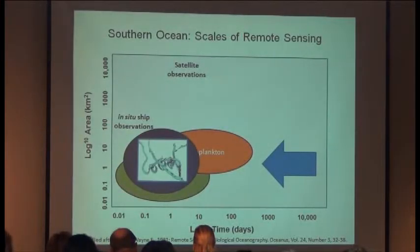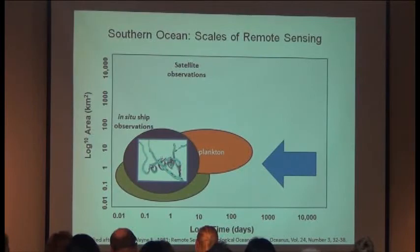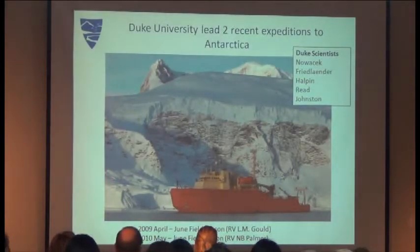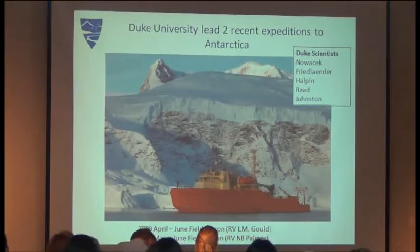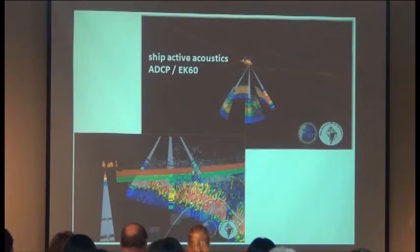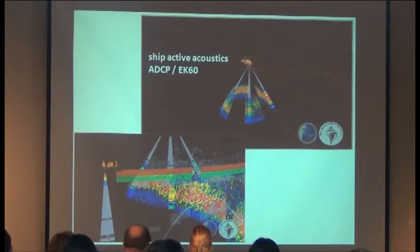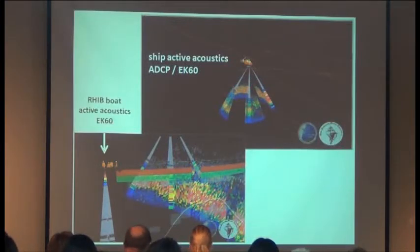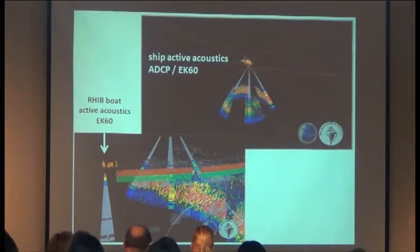Down at the scale of whale foraging, we need to be able to do a better job of measuring where the prey are in real time, co-occurring with the animals. Ari already showed some examples from the tagging side, so I'm going to show mainly from the acoustic side of measuring the prey. This is some data from two recent cruises, 2009 and 2010. We were using ship-borne acoustic echo sounders, towed fish acoustic echo sounders, as well as echo sounders attached to a small zodiac boat.